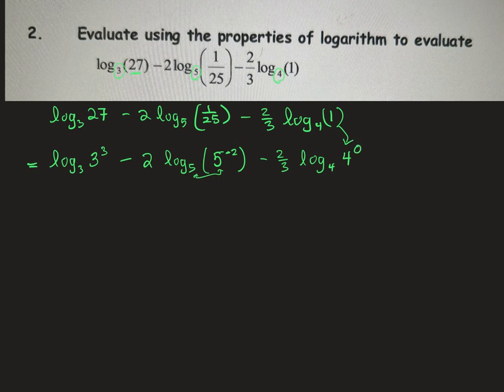So if I make that exponent 0, 4 to the 0 is equal to 1. So there we go. Now we have our bases the same. We haven't changed anything because 4 to the 0 still equals 1, but we'll be able to simplify that now that we have the same base.